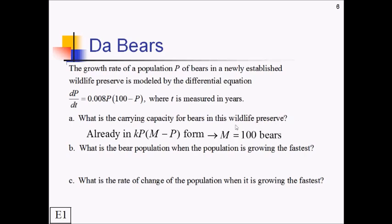So the easy thing is the carrying capacity is just whatever P is being subtracted from inside this parentheses, at least if it's in this form. If we're already in kP parentheses M minus P form, then our carrying capacity is just going to be the M, which in this case is 100. So what that means is that 100 bears, that's the upper limit on this preserve in terms of no matter how long these bears are going on, they're never going to get higher than 100.